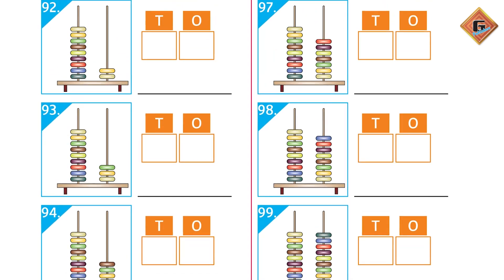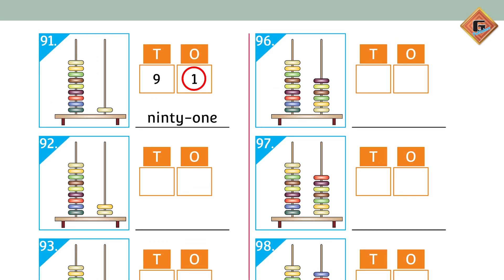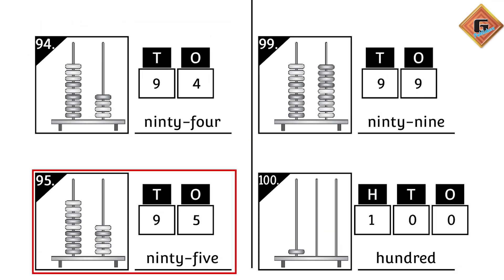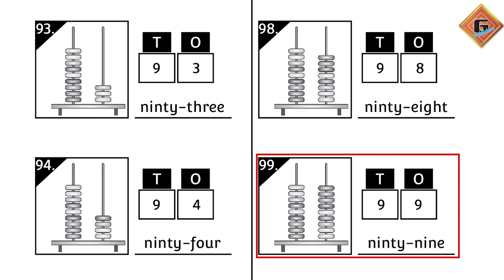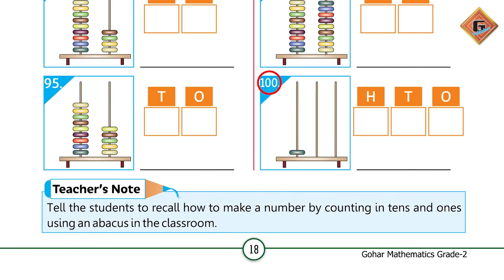Move to page 18. The first picture shows one bead on the ones side and nine beads on the tens side. The number name is 91. Then 92, 93, 94, 95, 96, 97, 98, 99.